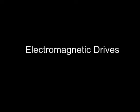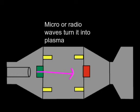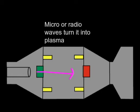Last but not least are electromagnetic drives. These drives use radio or microwaves to heat the gas into a plasma, and then a superconductor to accelerate it out.